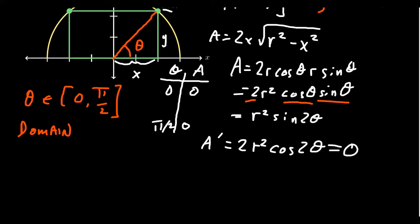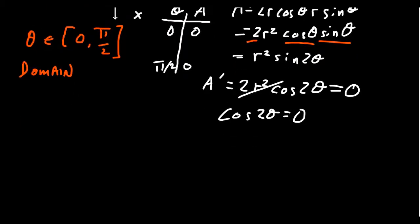And if you set that equal to 0, we'll divide both sides by 2r², you just end up with cos(2θ) = 0. If you don't like the double angle, we could use some angle identity to switch it back. But I'm actually quite happy with this situation.